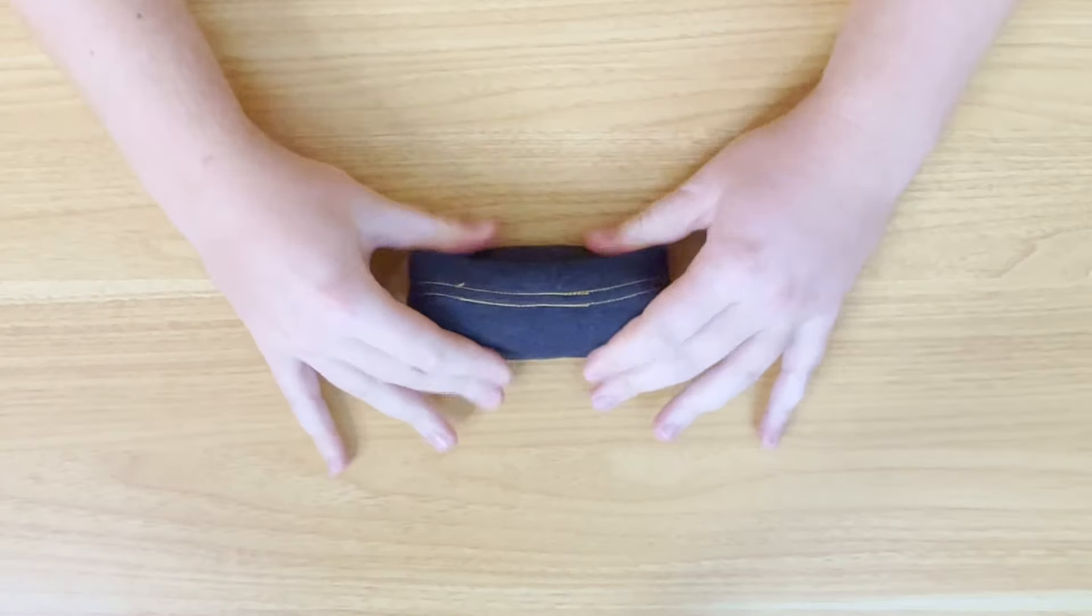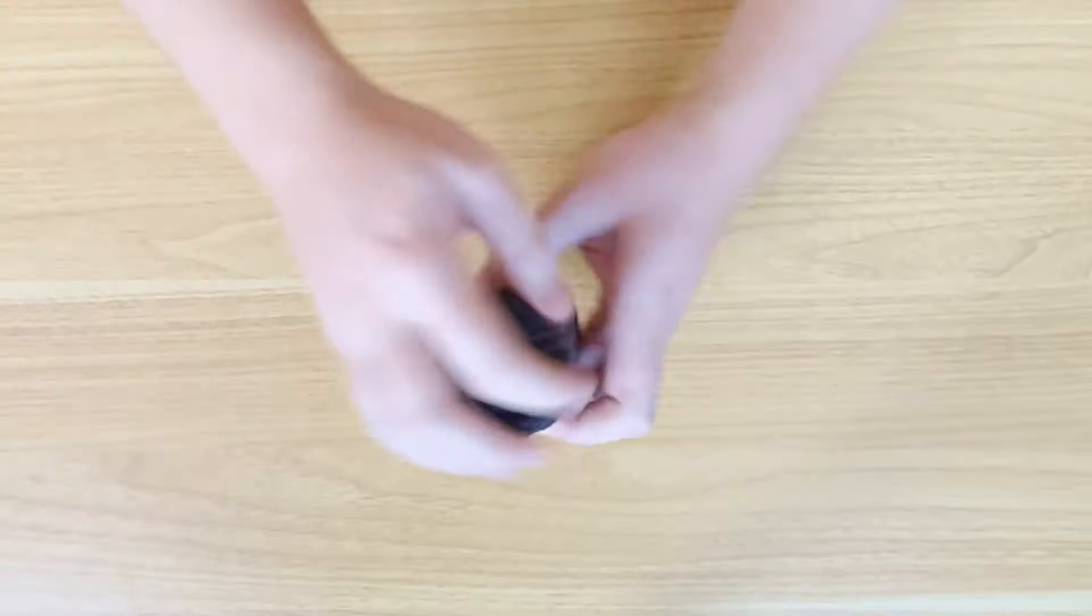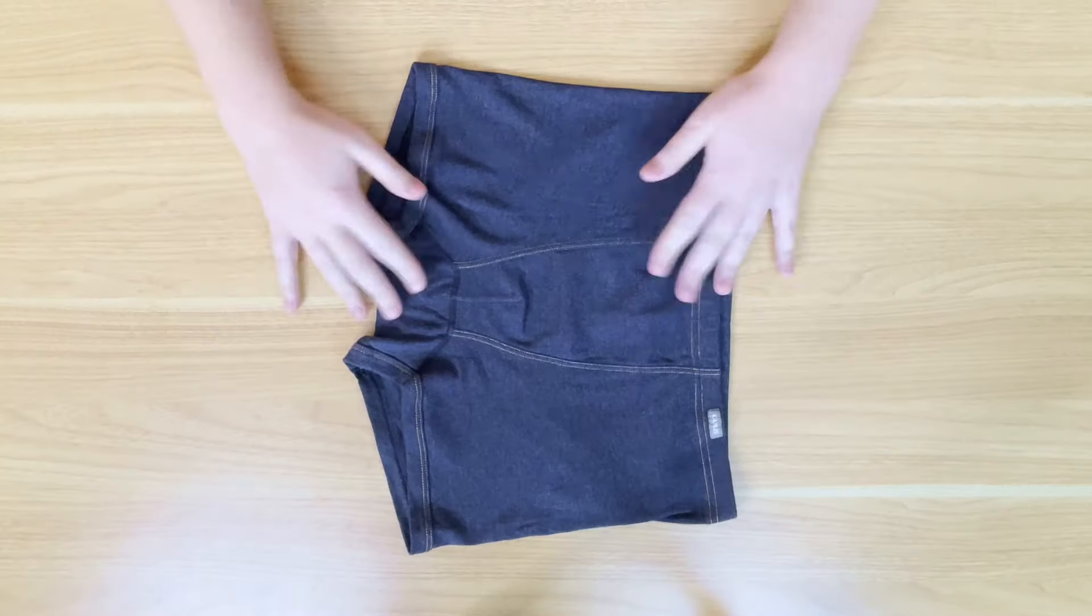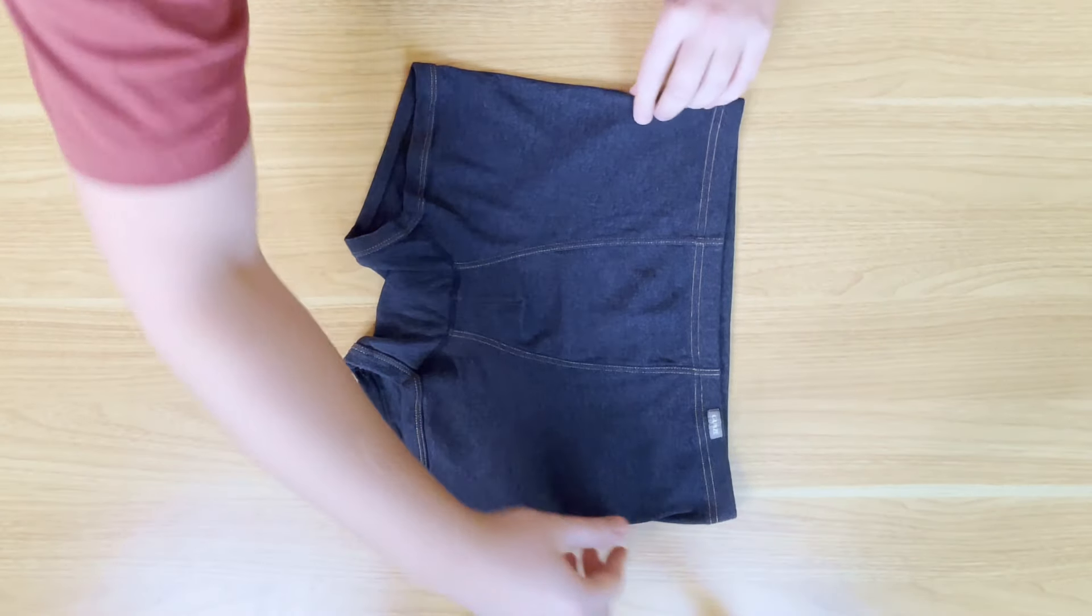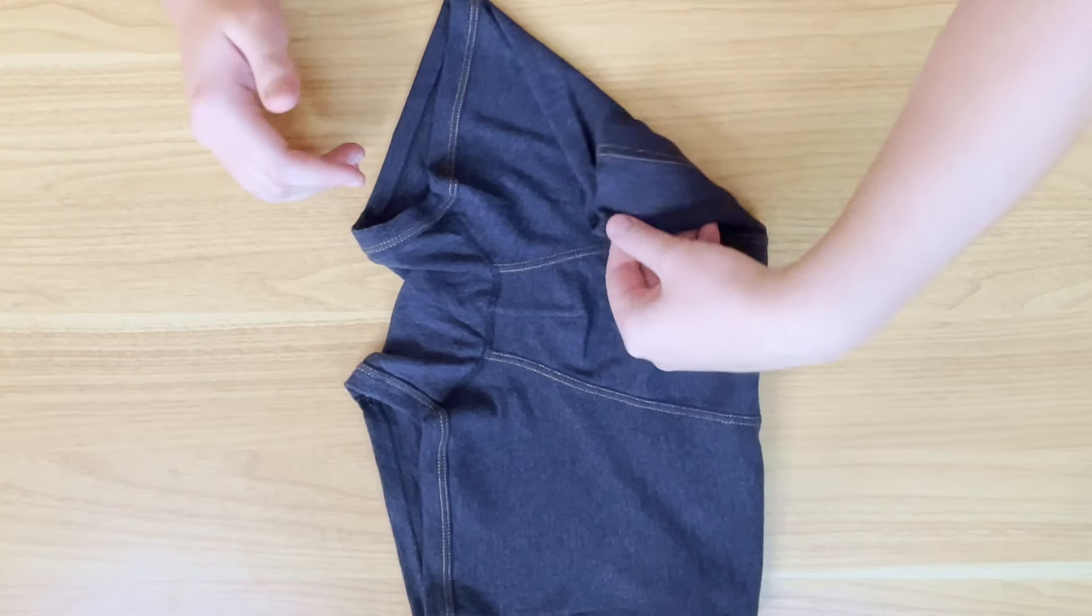But if you do take like a hairband, you can place that over it and it's going to hold it together nicely. So I want to show you this variation instead that is called the ranger roll. Now this one is great for travel as well, for saving space. As you can see here, you can place it laid down. You can place it standing up if you're so inclined.